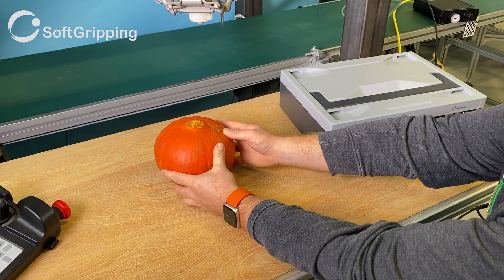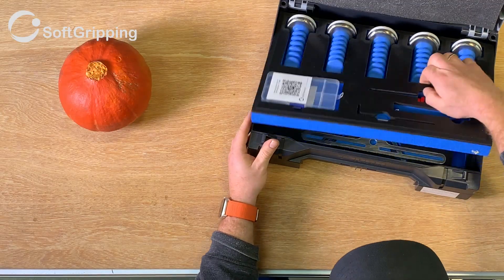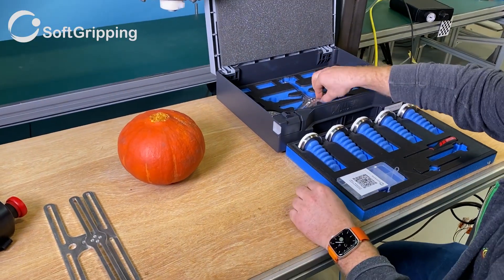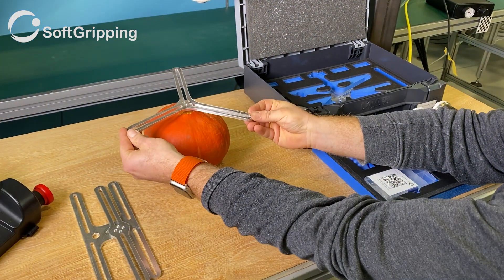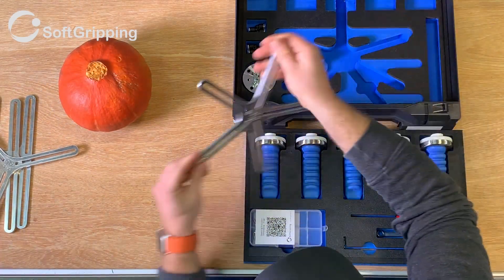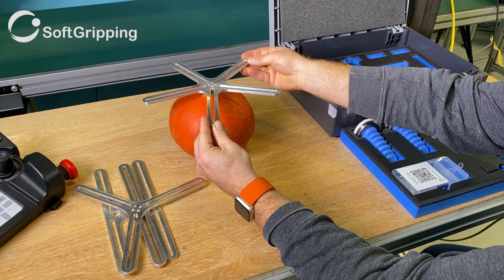Today we will take a look at the new Gorilla Finger Engineering Kit. To select the plate, think about what object you want to handle. In this case, the round pumpkin is best handled with a centric soft actuator.